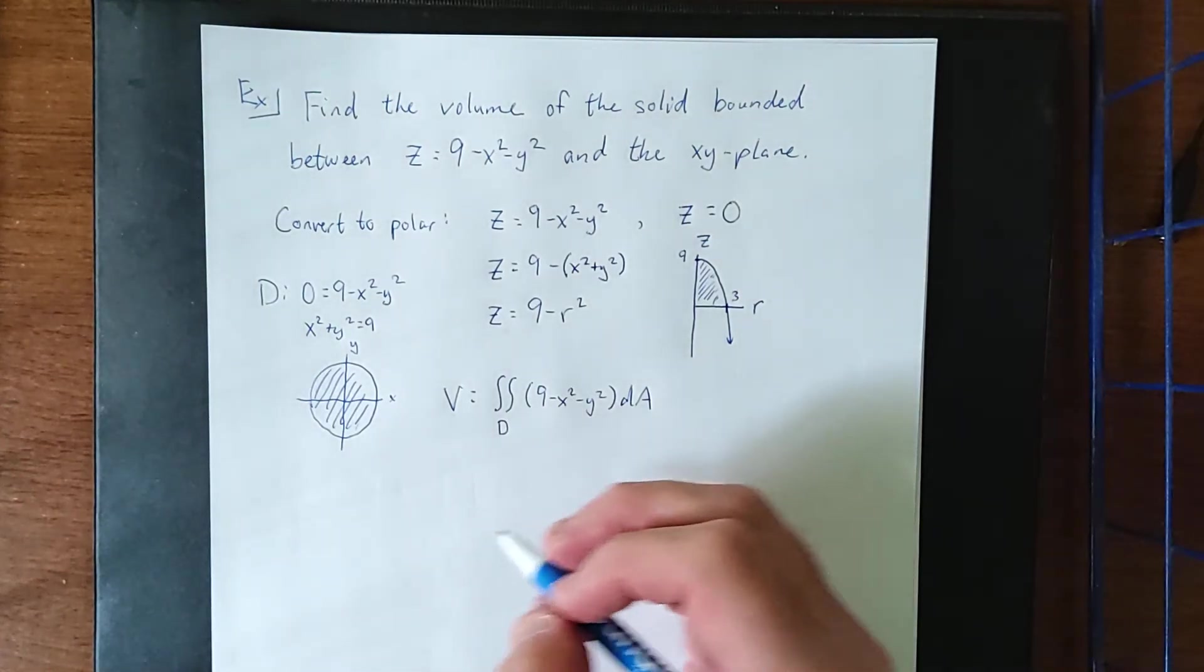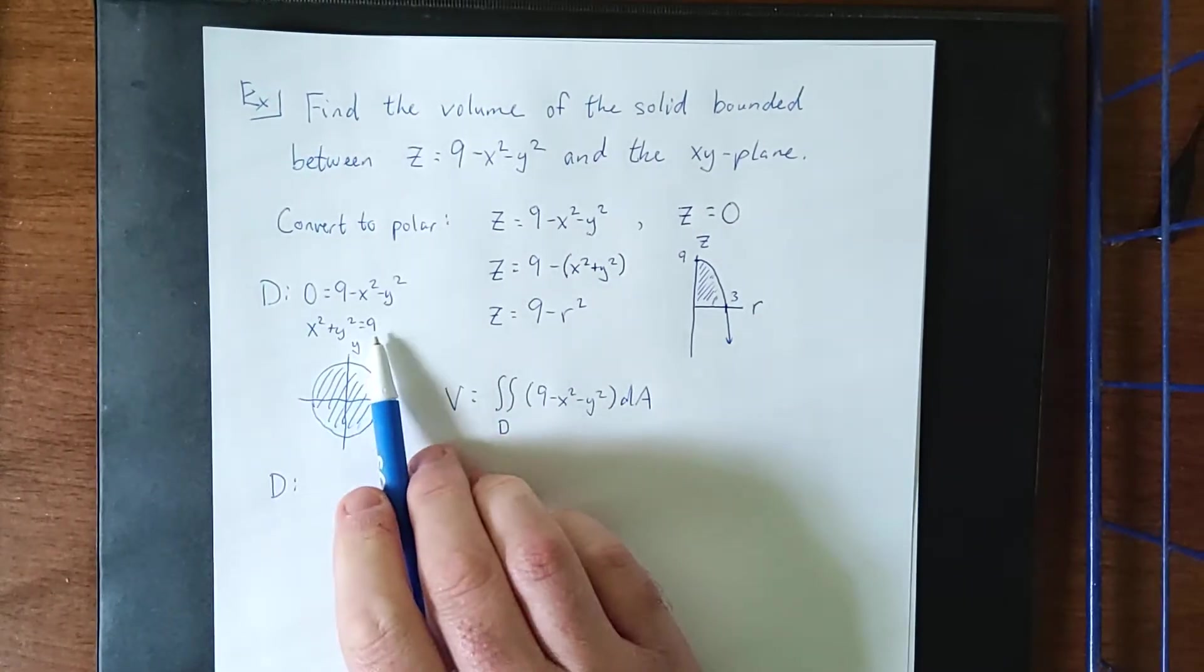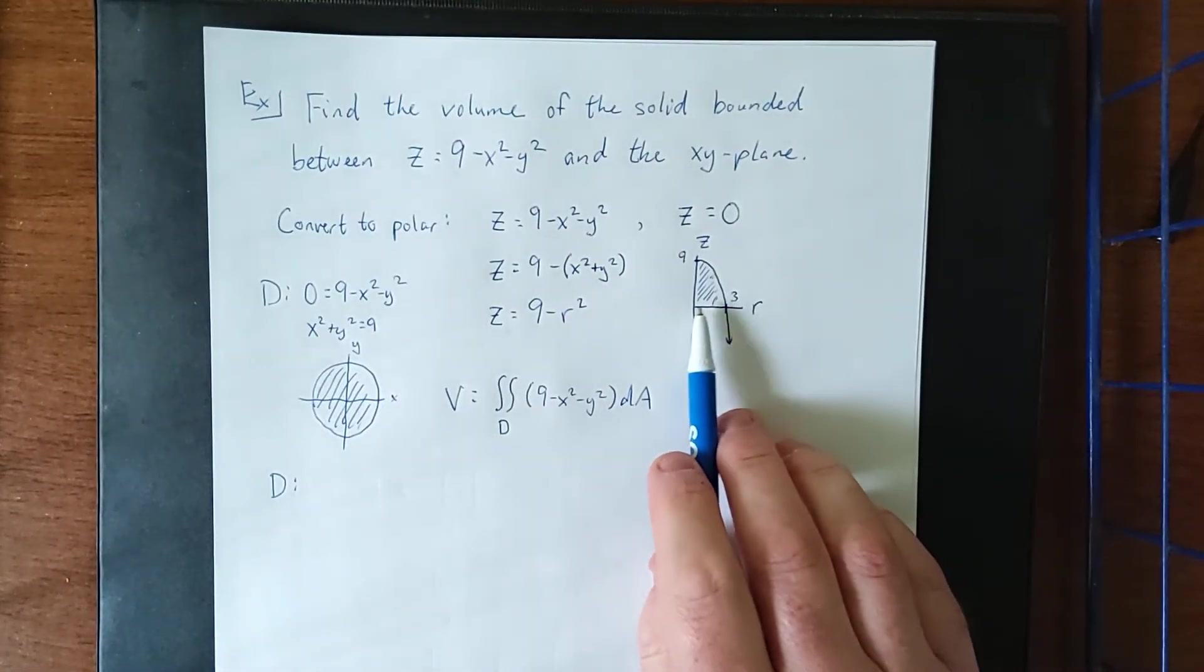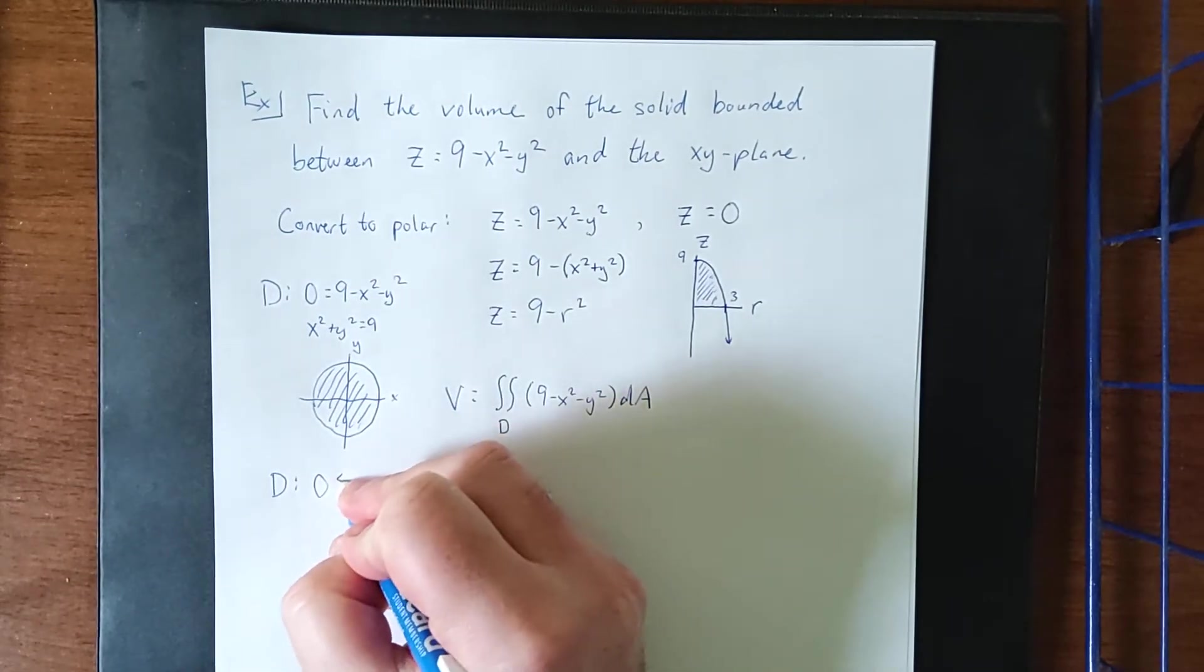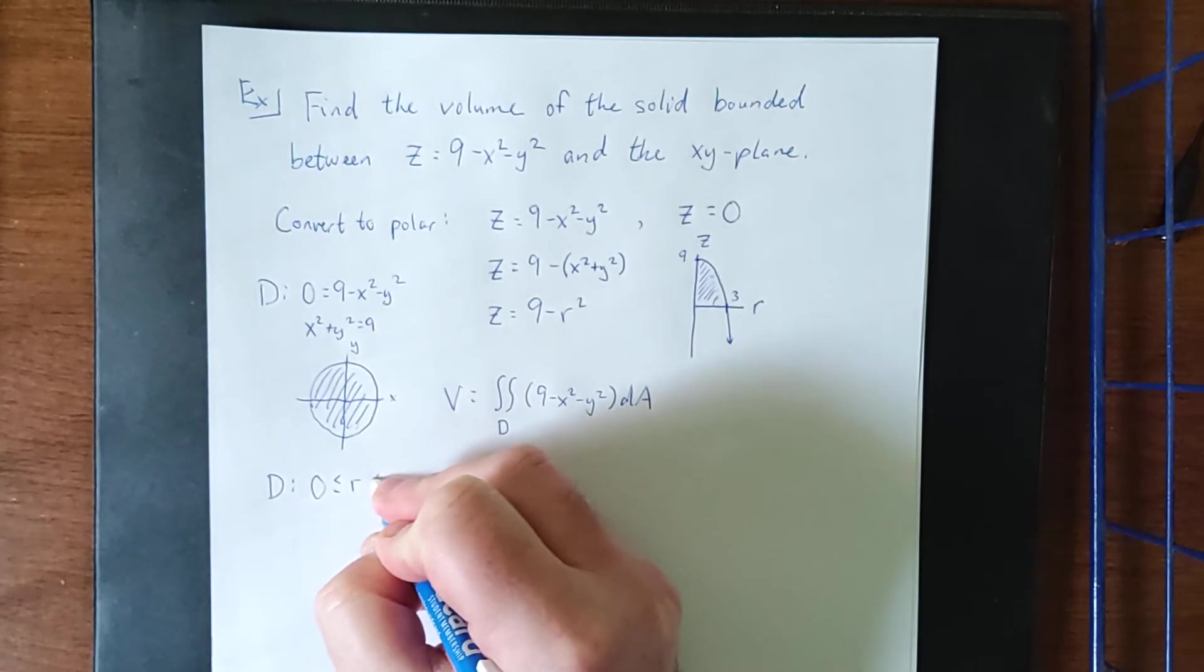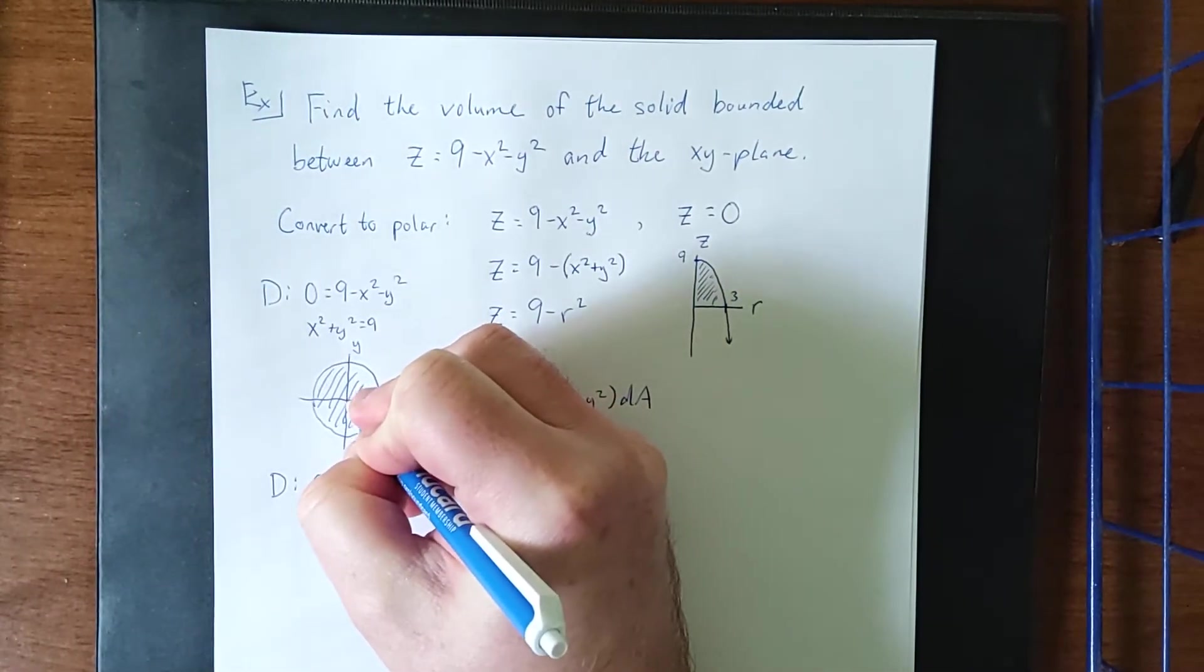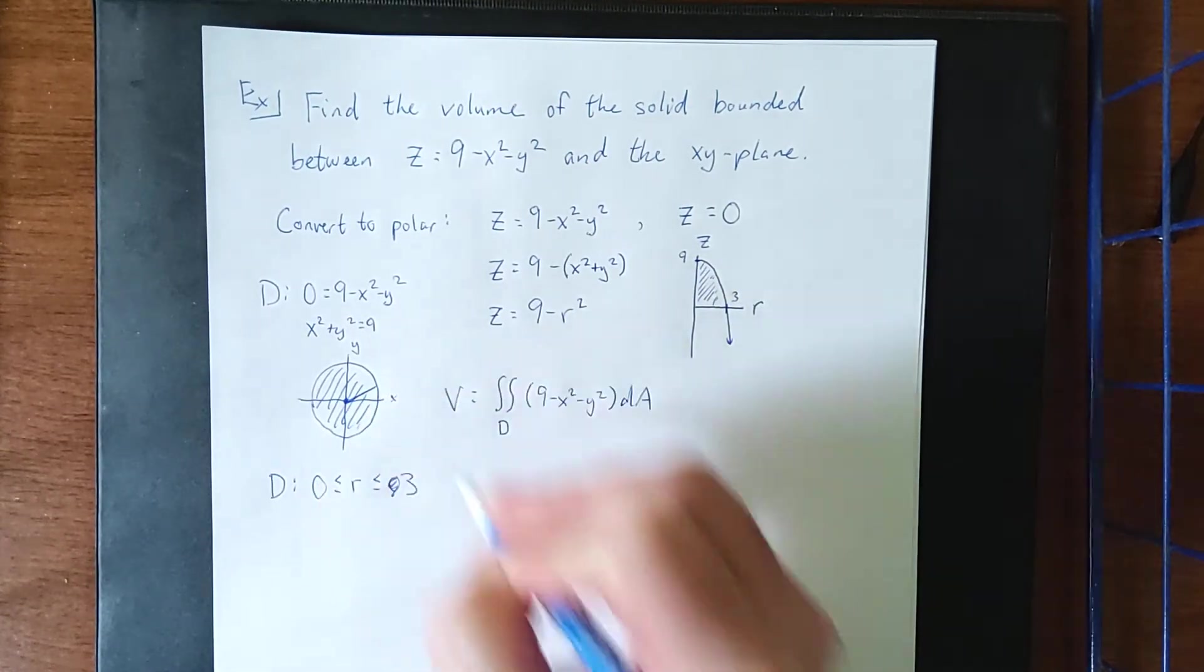So three conversions that need to take place. First one is going to be the domain. Now we've identified this as a circle of radius 3. We've also indicated over here that r would vary between 0 and 3. So with that in mind, r is going to go from 0 to 3, which again is represented by going from the pole out to the edge of the circle.